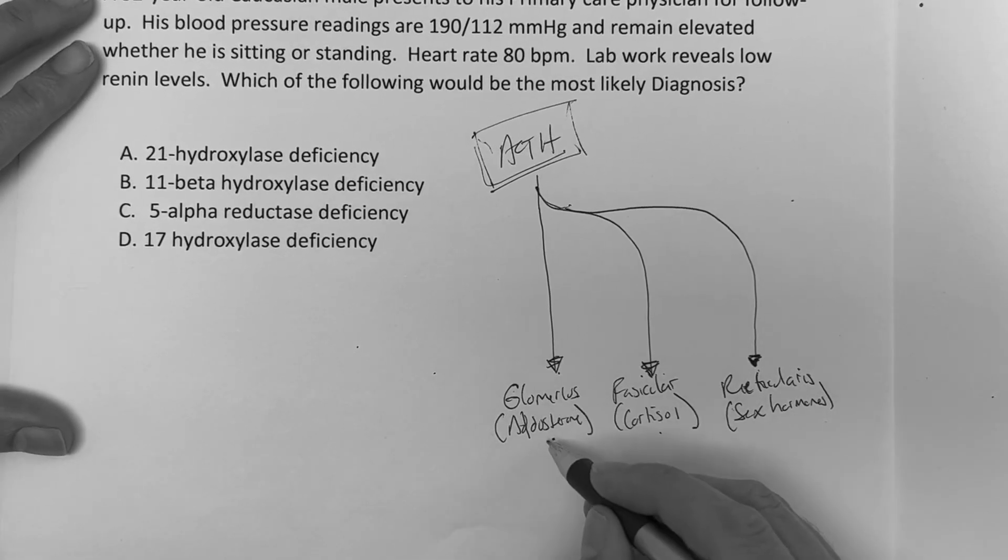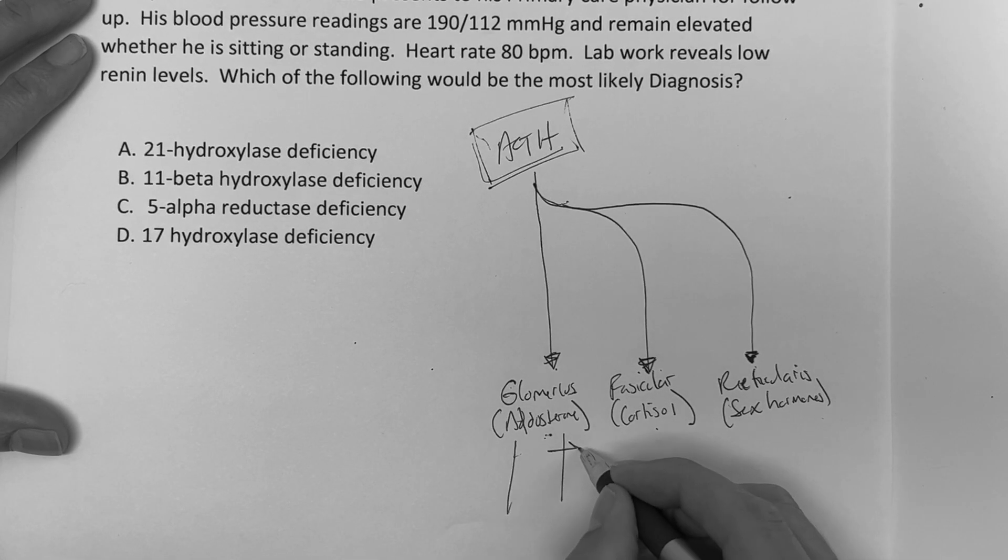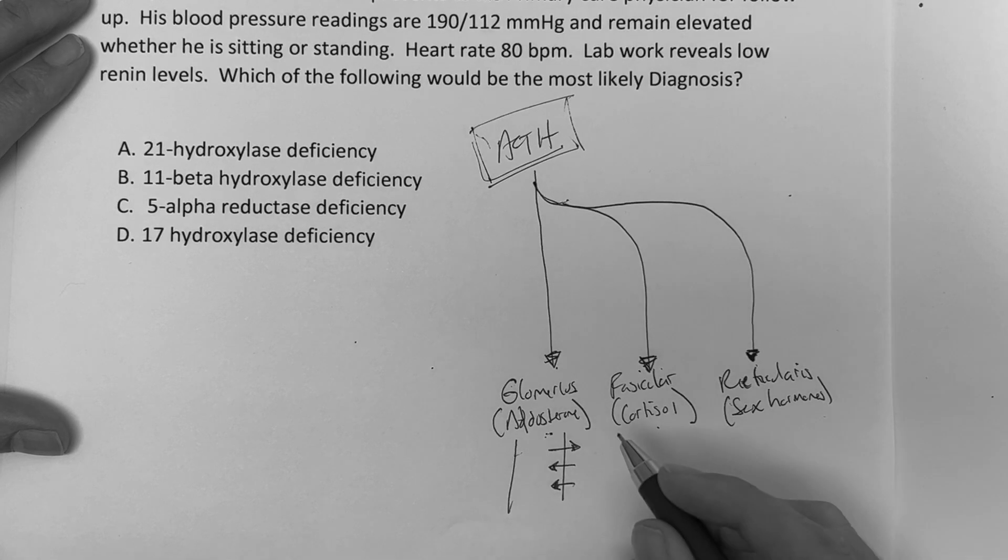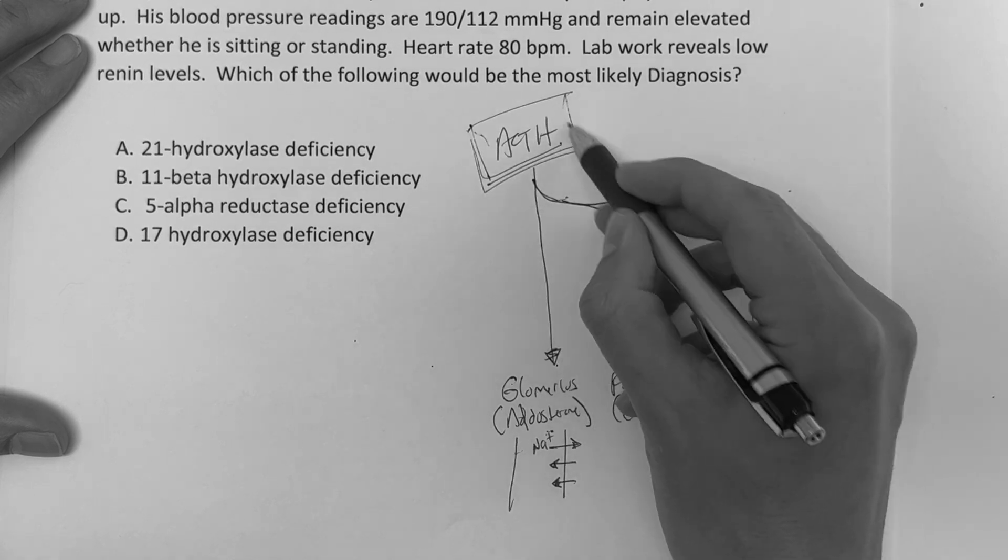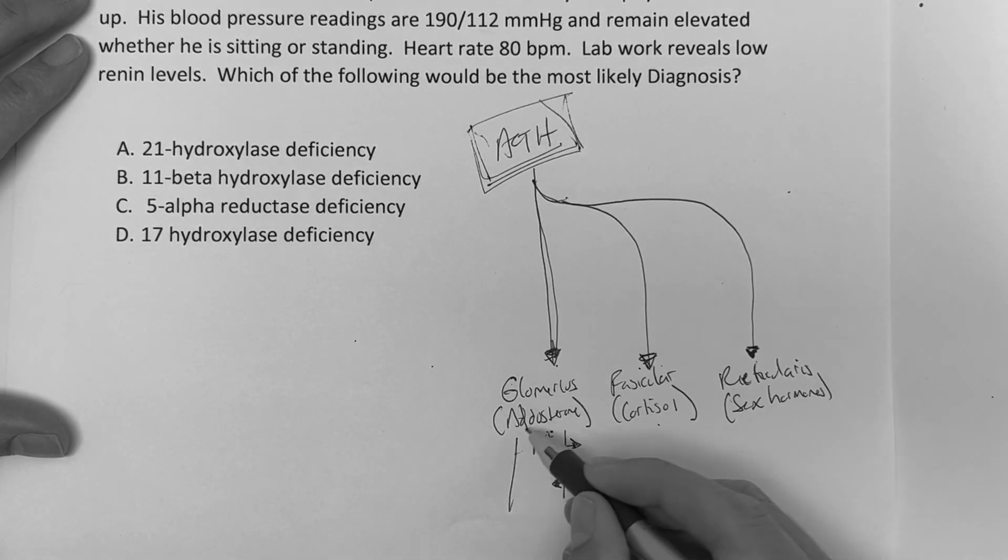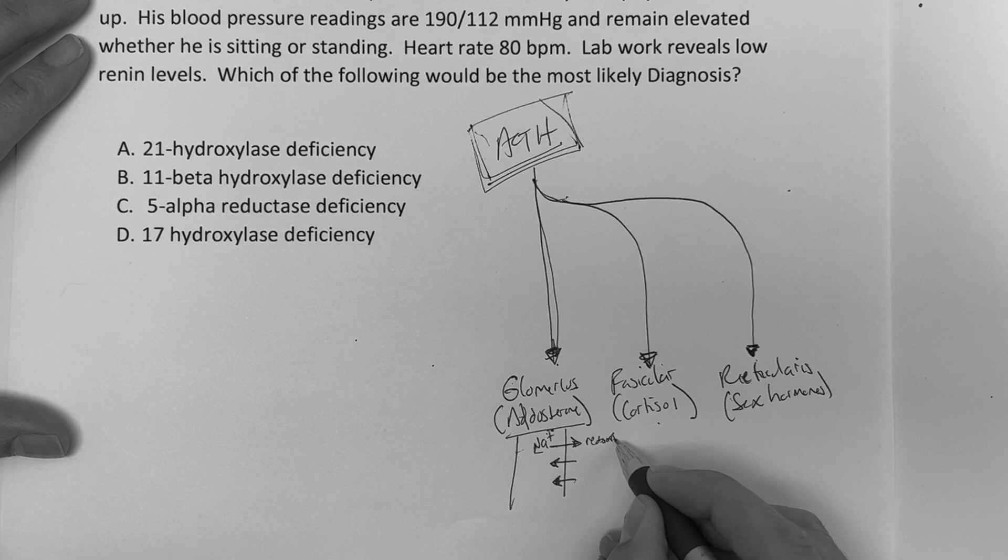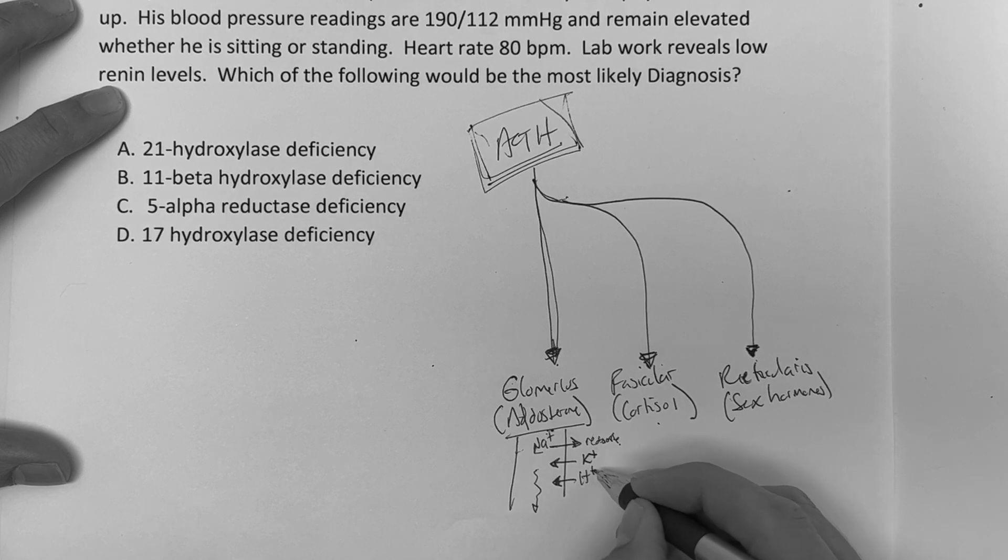So with this, the glomerulosa, with the aldosterone, you've got to understand this concept right here, and it's very important. And if you do this, you'll get so many questions right with understanding this concept. Because here, normally, meaning if I stimulate and then I go down this pathway to the glomerulosa, or at least aldosterone, I will reabsorb sodium, and then I will excrete potassium and hydrogen ion.